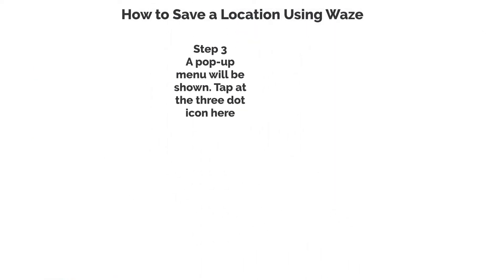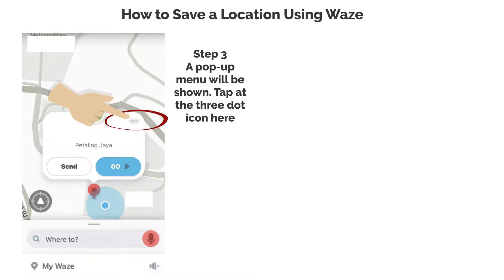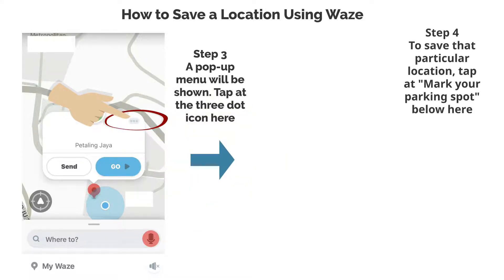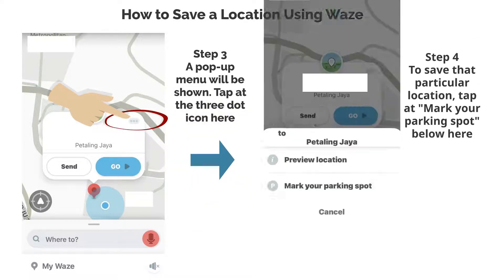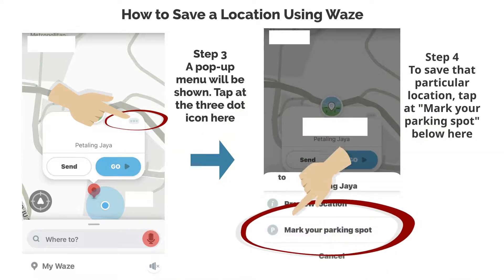Step 3. A pop-up menu will be shown. Tap at the three dot icon here. Step 4. To save that particular location, tap at Mark your parking spot below here.